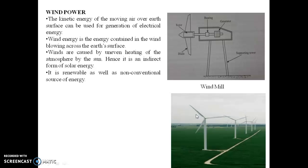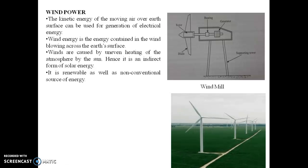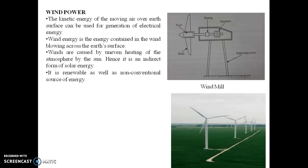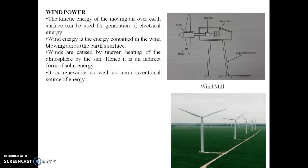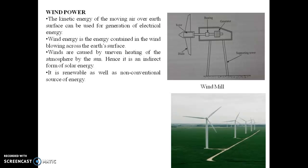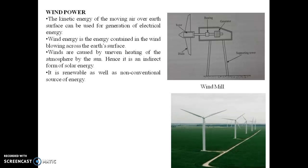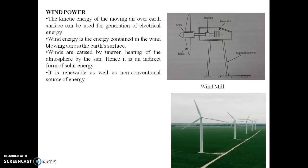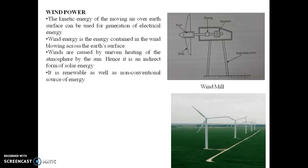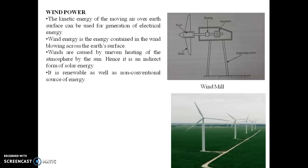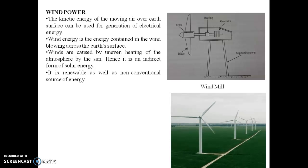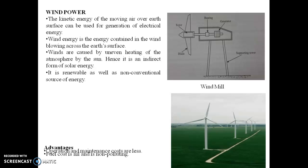The turbine spins the generator to generate electricity. The turbine and generator are directly coupled to each other. When the turbine starts rotating, the mechanical energy is automatically converted into electrical energy. This completes the brief introduction, construction, and working of a windmill or wind power system.